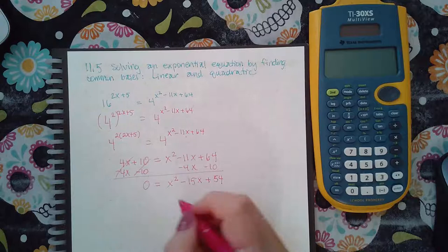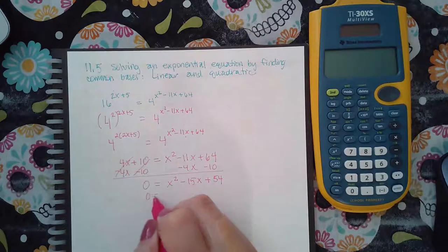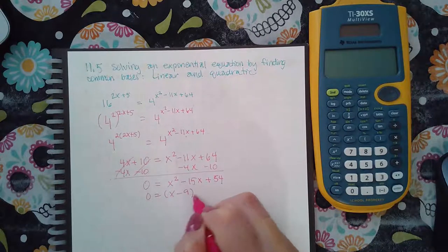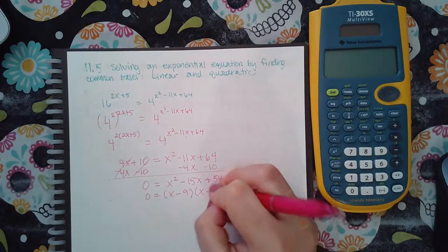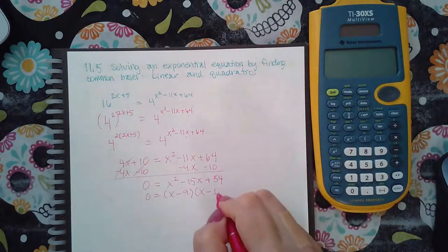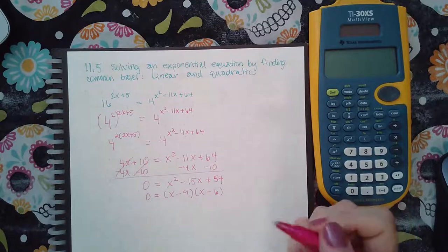I can factor that. It's x minus 9 and x minus 6. Those multiply to give me 54 and add to give me negative 15.